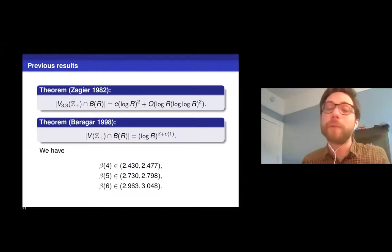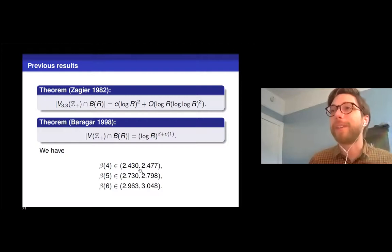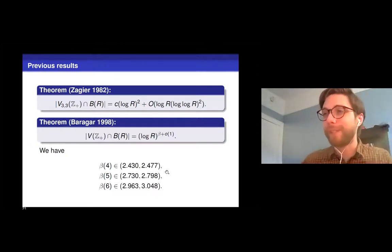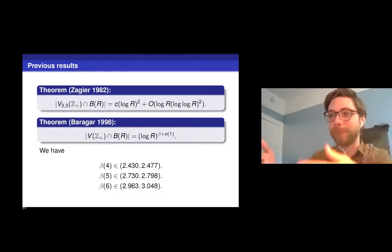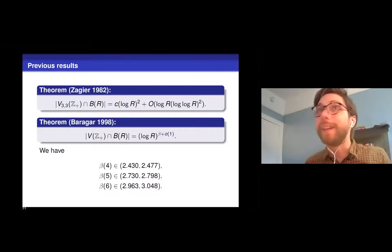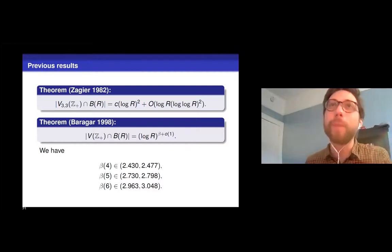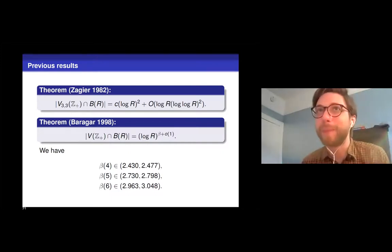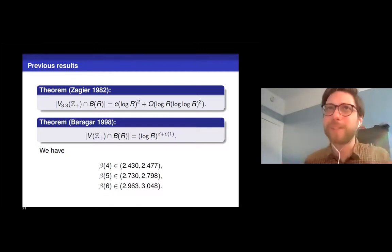And if this were an in-person talk, this would be the part where I would look around the room and I would say, okay, should we try to guess what beta is now? Because in the n equals three case, beta is two. So when n equals four, what do we think beta is? And probably everyone in the room would guess, oh, when n equals four, probably beta is three. That would make sense. Surprisingly, that's not the case. So these are bounds that Baragar found in his papers in the 90s. In particular, when n equals four, this exponent here is not three. It's not two. It's some number between 2.43 and 2.48.